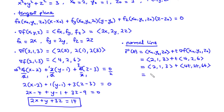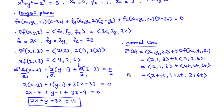Adding corresponding components, we get R of t equals (2 plus 4t, 1 plus 2t, 3 plus 6t). This is the equation of the normal line to the surface given by x² plus y² plus z² equals 3 at the point P0. That's it for today's video. Thanks for watching and see you in my next video. Bye-bye.